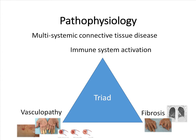Systemic sclerosis is a multisystemic connective tissue disease characterized by a triad of immune system activation, vasculopathy, and fibrosis. For vasculopathy, there is obliterative and proliferative microvascular involvement, and fibrosis results from increased extracellular matrix deposition that affects the skin and internal organs.